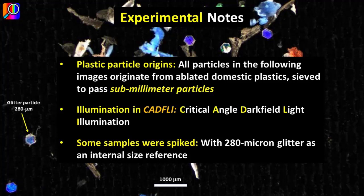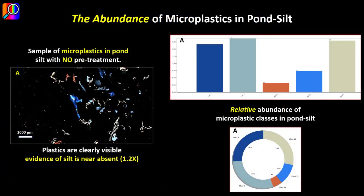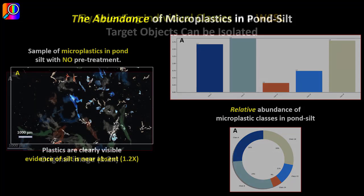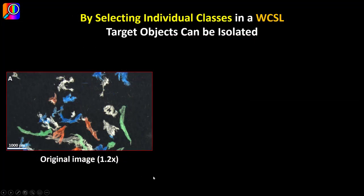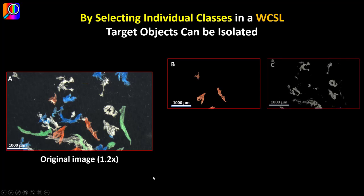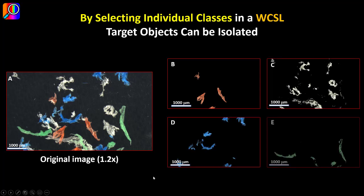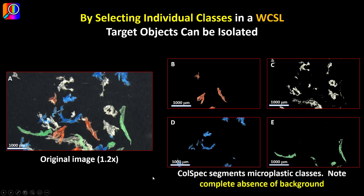All the plastic particles shown in the following images originate from ablated domestic plastics. They were sieved to pass submillimeter particles, and all samples were illuminated in critical angle dark field illumination. Some samples were spiked using 280 micron glitter as an internal size reference. This sample of microplastics in pond silt is without pretreatment and shown in cadfly illumination. Plastics are clearly visible and evidence of silt is near absent. The abundance of plastic classes are shown in histogram and pie chart formats. By selecting individual classes in a working color spectral library, target objects can be isolated. Notice that the background has been completely removed.